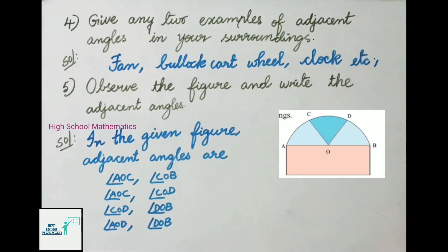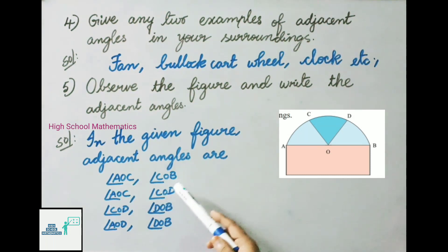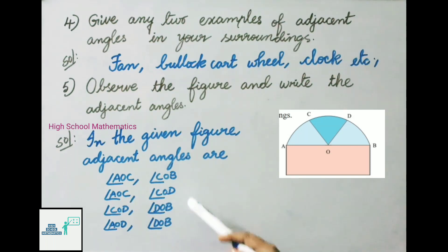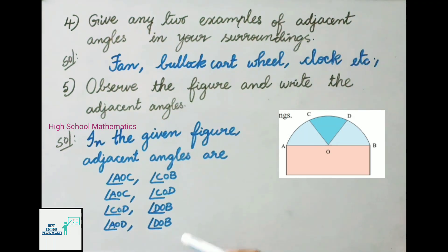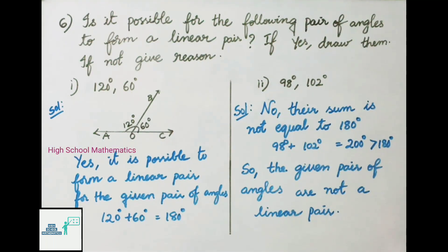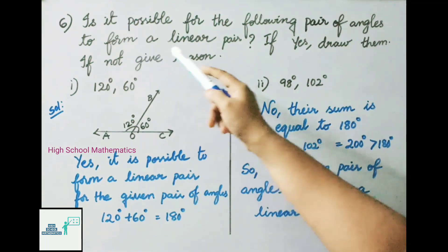Question number five: observe the figure and write the adjacent angles. In the given figure, the adjacent angles are angle AOC and angle COD, angle COD and angle DOB, and angle AOD and angle DOB.